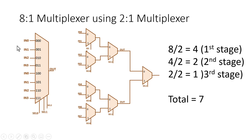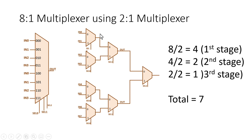Since it has 8 input lines, we require 4 2-to-1 multiplexers to receive each pair of inputs. IN0 and IN1 are applied to the first 2-to-1 multiplexer, IN2 and IN3 to the second, IN4 and IN5 to the third, and IN6 and IN7 to the fourth. Dividing the total inputs by 2 gives the number of 2-to-1 multiplexers required at the first stage.